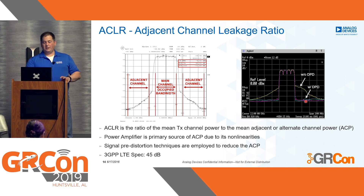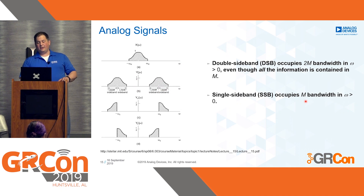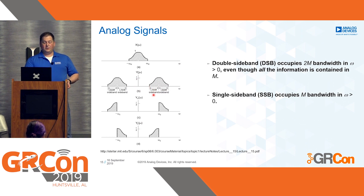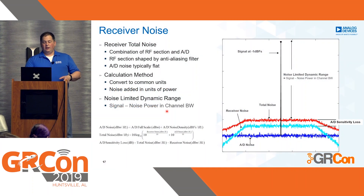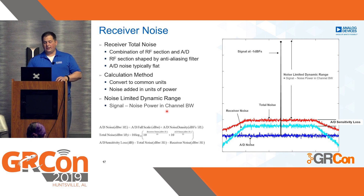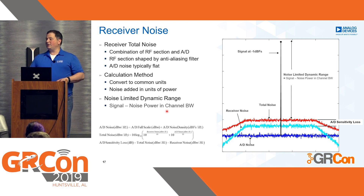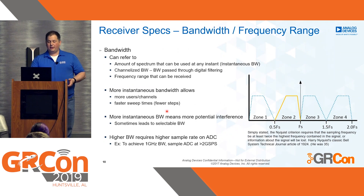For analog signals like double sideband and single sideband, we have the same concept: channel bandwidth for double sideband is split into upper and lower sidebands — that's why it's inefficient. Single sideband is just the bandwidth of half of it. On the receiver side, we can have different kinds of noise: total noise, receiver noise, ADC noise, LNA noise. When somebody says 'my system is noisy,' you need to ask specifically what is noisy.